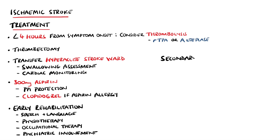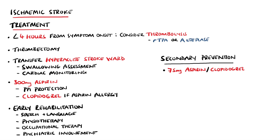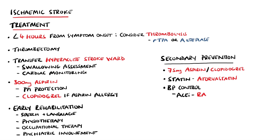Following the acute phase, we look at secondary prevention. In addition to antiplatelet agents like aspirin or clopidogrel, other measures are taken including balancing lipid levels with statins such as atorvastatin, and blood pressure control — typically with ACE inhibitors as first line, such as ramipril, or alternatives such as calcium channel blockers like amlodipine, or diuretics such as indapamide.